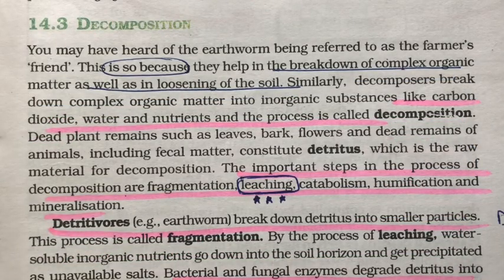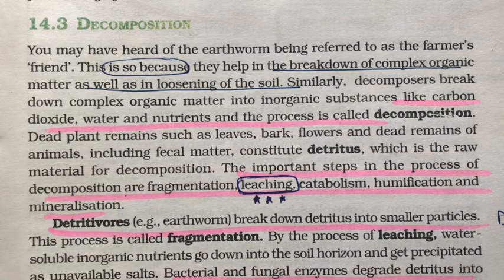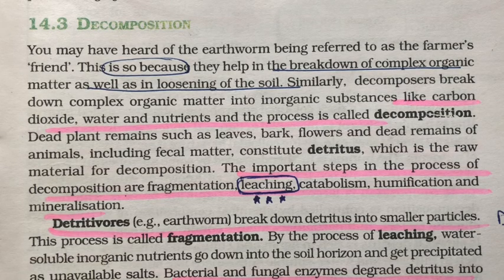The second function of ecosystem is decomposition — the breakdown of complex organic matter into inorganic substances like carbon dioxide, water, and nutrients. Dead plant remains such as leaves, bark, and flowers, along with dead animal remains and fecal matter, all constitute what is called detritus.